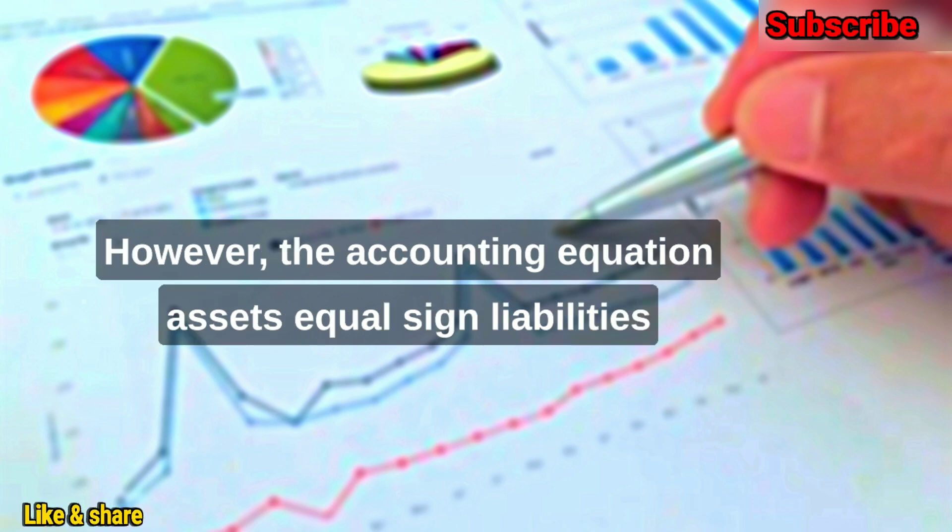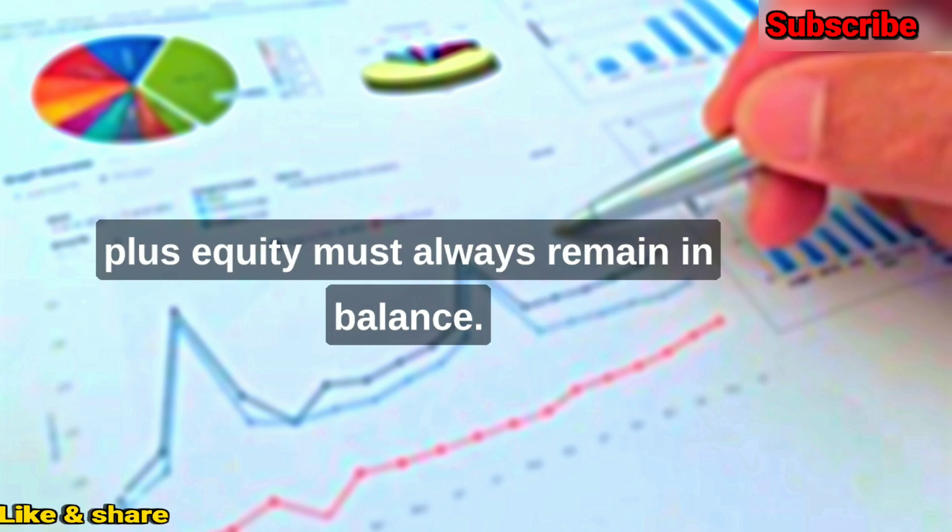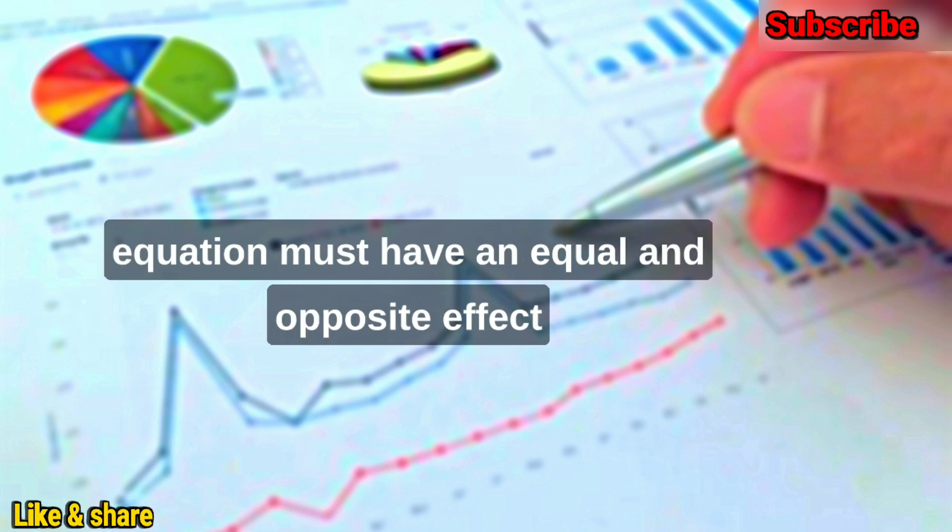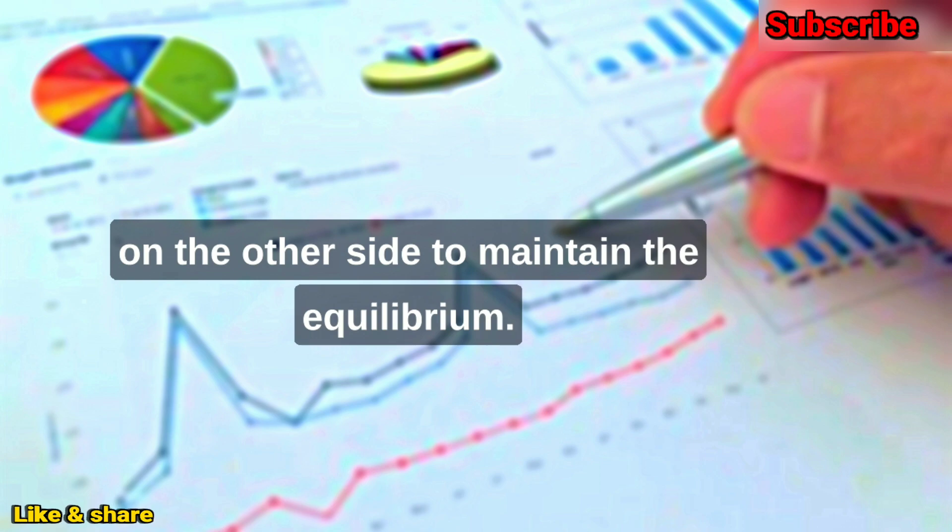However, the accounting equation - assets equal liabilities plus equity - must always remain in balance. Any transaction that affects one side of the equation must have an equal and opposite effect on the other side to maintain the equilibrium.